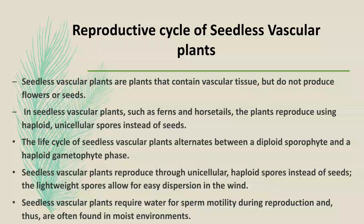The lightweight spores allow for easy dispersion in the wind. The life cycle of seedless vascular plants alternates between a diploid sporophyte and a haploid gametophyte phase. Seedless vascular plants reproduce through unicellular haploid spores instead of seeds. Seedless vascular plants require water for sperm motility during reproduction and thus are often found in moist environments.